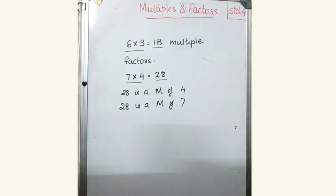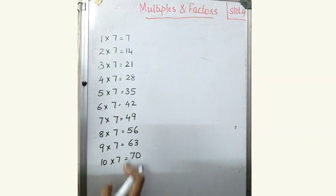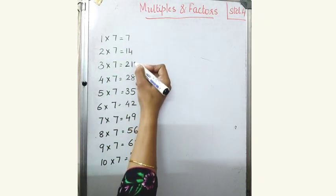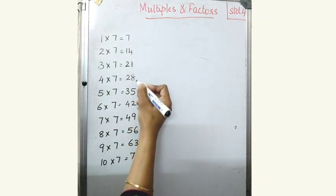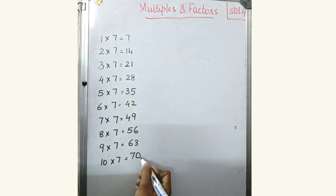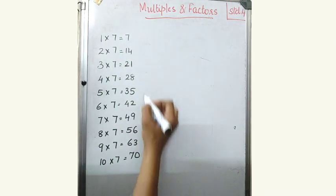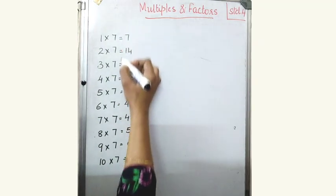We can write down a multiplication table and explain the concept. All of you look here. This is the multiplication table of 7: 7, 14, 21, 28, 35, 42, 49, 56, 63, 70. So these are the multiples of 7.